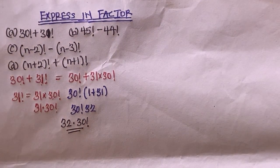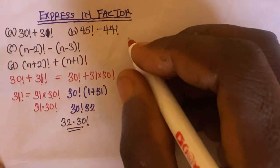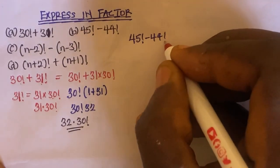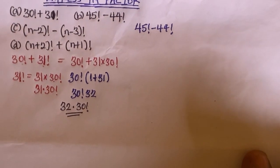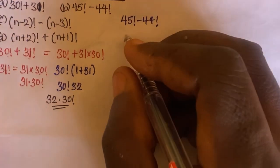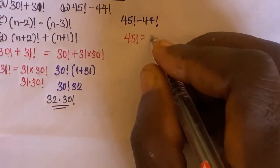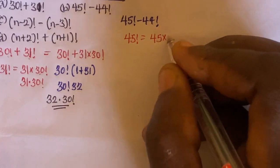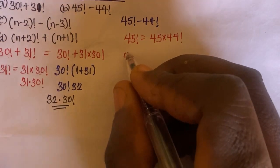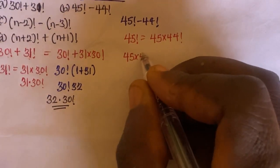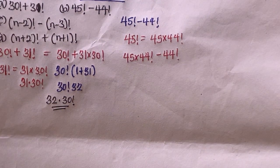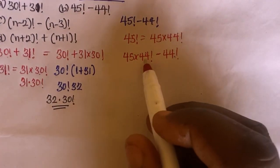Now let's go to the next question, question B: 45 factorial minus 44 factorial. Since 45 is the higher integer, we re-express 45 factorial as 45 times 44 factorial. So the expression becomes 45 times 44 factorial, minus 44 factorial. We can factorize out 44 factorial.